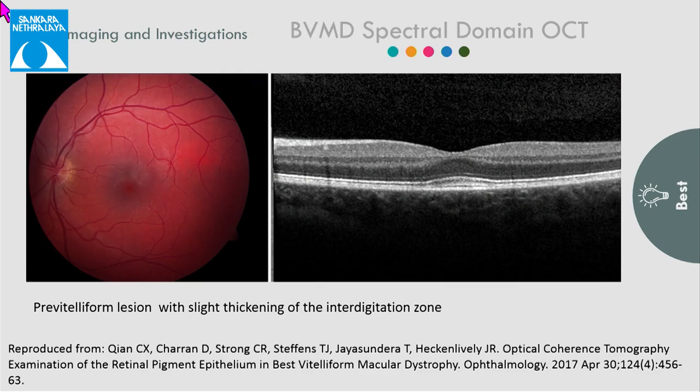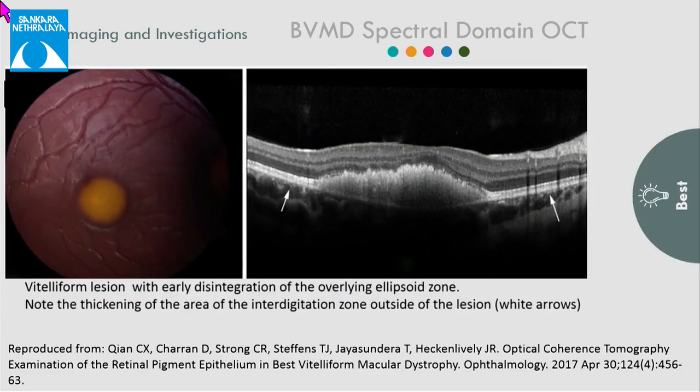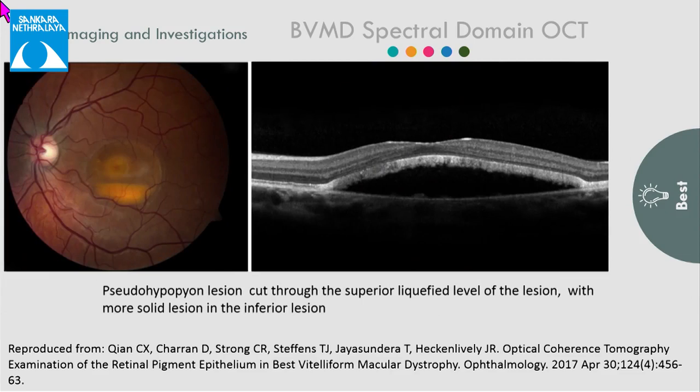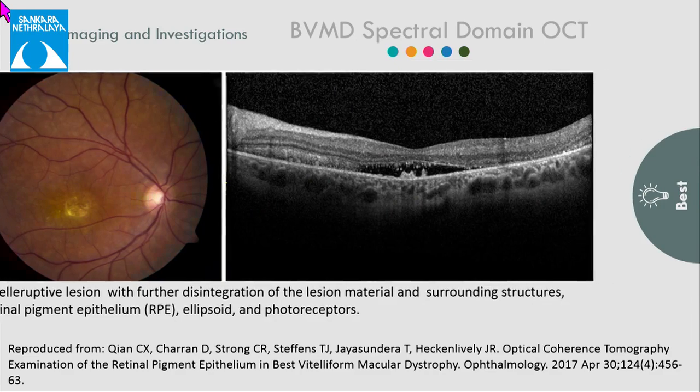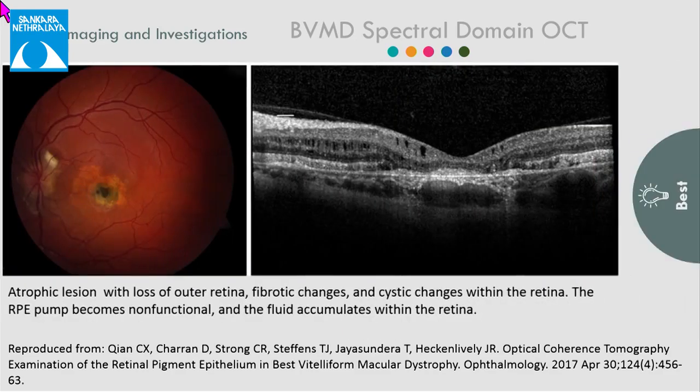Moving on to OCT findings. In the pre-vitelliform stage, there is thickening of the interdigitation layer, also known as Verhoeff's layer. In the vitelliform stage, there is a hyperreflective dome-shaped lesion seen between the ellipsoidal cells and the RPE cells. In the pseudohypopion stage, there is an optically empty space with clumping of hyperreflective material. In the vitelleruptive stage, there is disintegration of this material and the surrounding structures, followed by the atrophic stage.